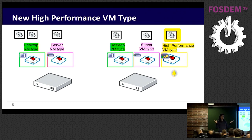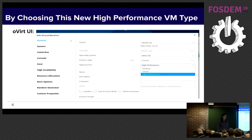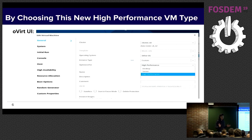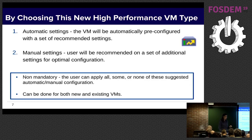Automatically the VM will be a high performance VM. This is how it looks in the oVirt UI — there is the 'optimized for' field with three values: server, desktop, and now the new value, high performance. Once you set this value, you will get a high performance VM. It looks very easy, and it is much easier than before — but by choosing the high performance VM type, two things happen behind the scenes.